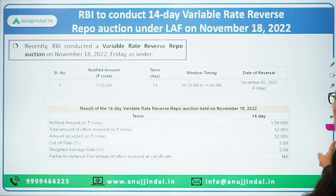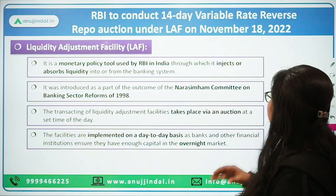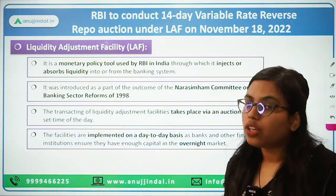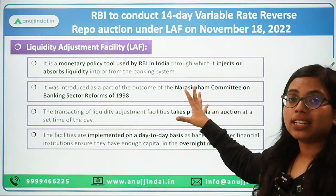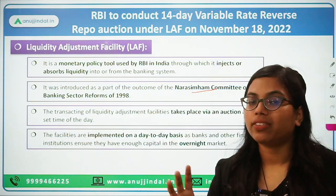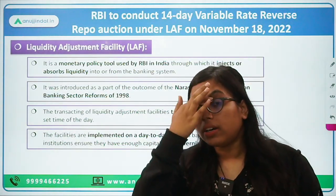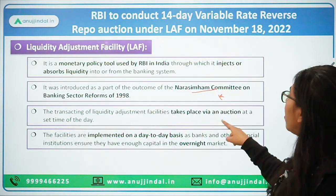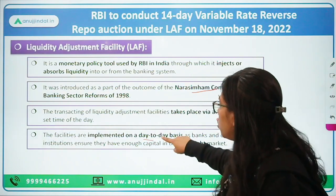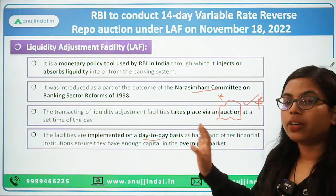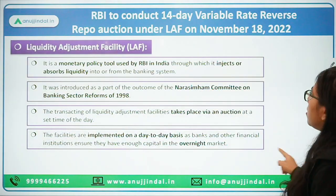I hope this analysis is crystal clear to you. Moving forward, there are some important points about LAF that can be very helpful for answering questions in examinations. For example, LAF was an outcome of the Narsimham Committee on Banking Sector Reforms of 1998. Under LAF, any absorption or injection of liquidity is done via an auction. Whatever repo rate or reverse repo rate auction is conducted, it is done on an overnight basis for the overnight market.